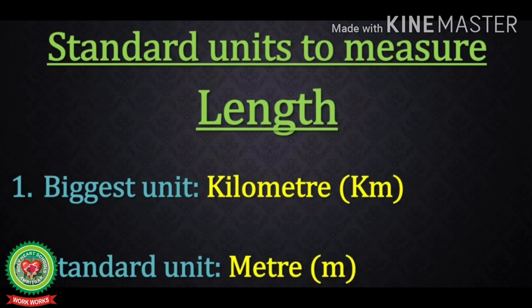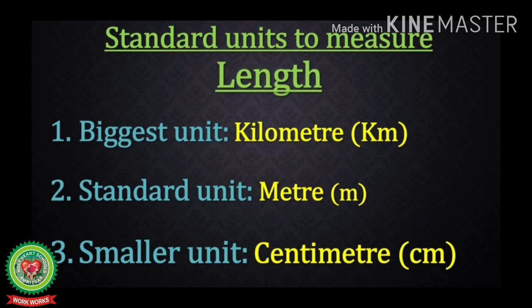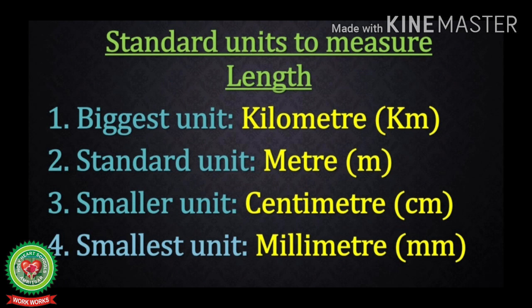The smaller unit of length — not the smallest, but most commonly used — is centimeter. Your pencil, scale, and book are all measured in centimeters. The fourth and smallest unit of length is millimeter, used to measure things you can hold in your fingers only, for example an eraser, sharpener, or a blunt pencil.